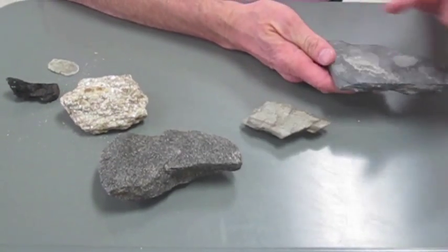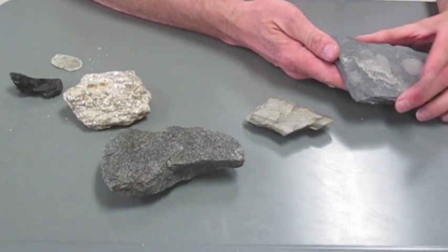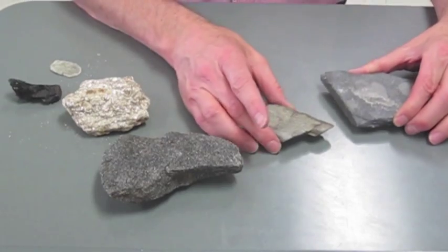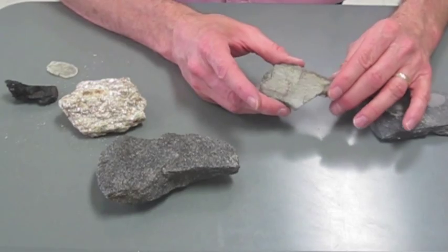These are all metamorphic rocks and they go progressively from something like a slate, which with more temperature and pressure goes to a phyllite. The phyllite has tiny little micas that are aligned to each other.